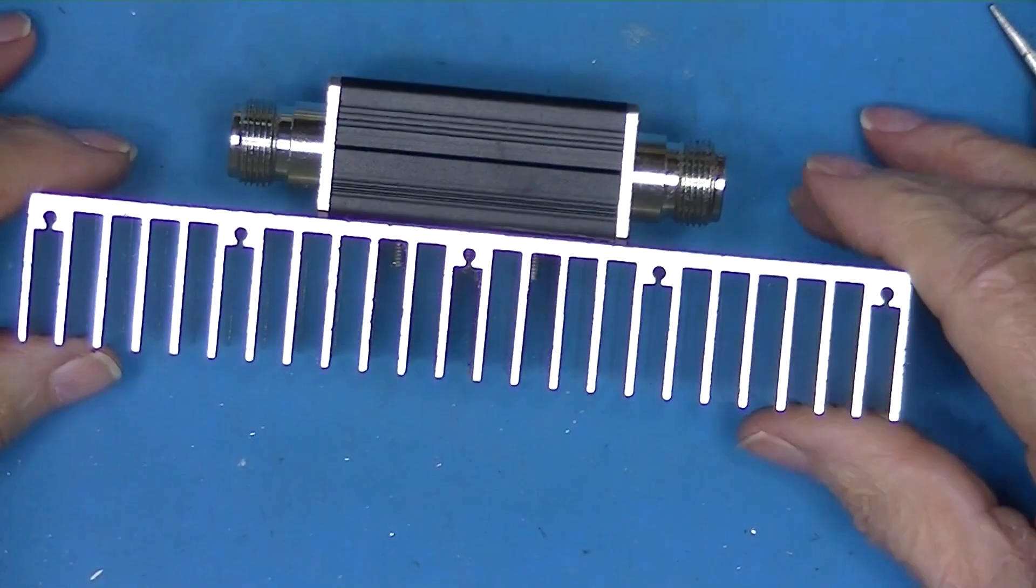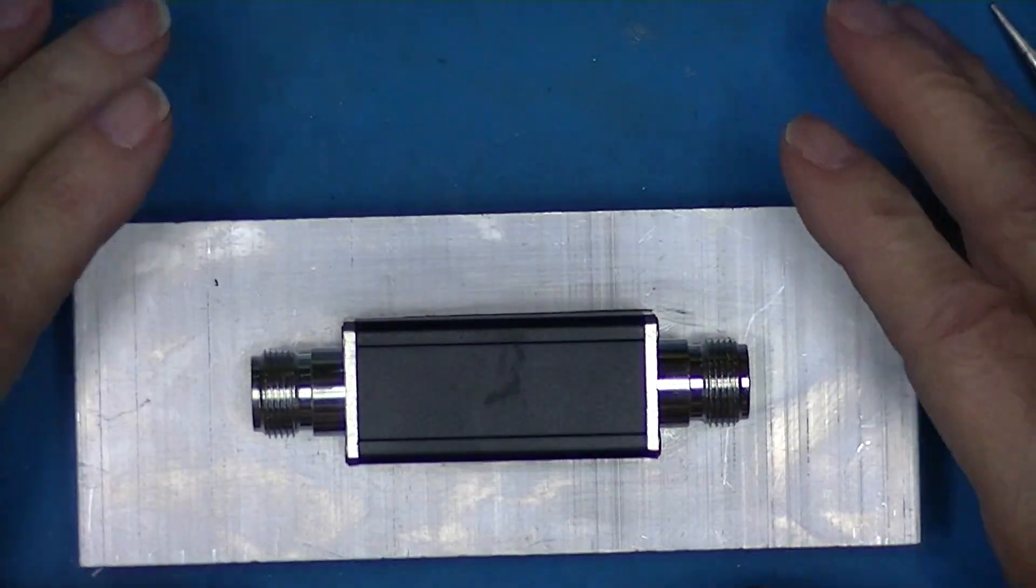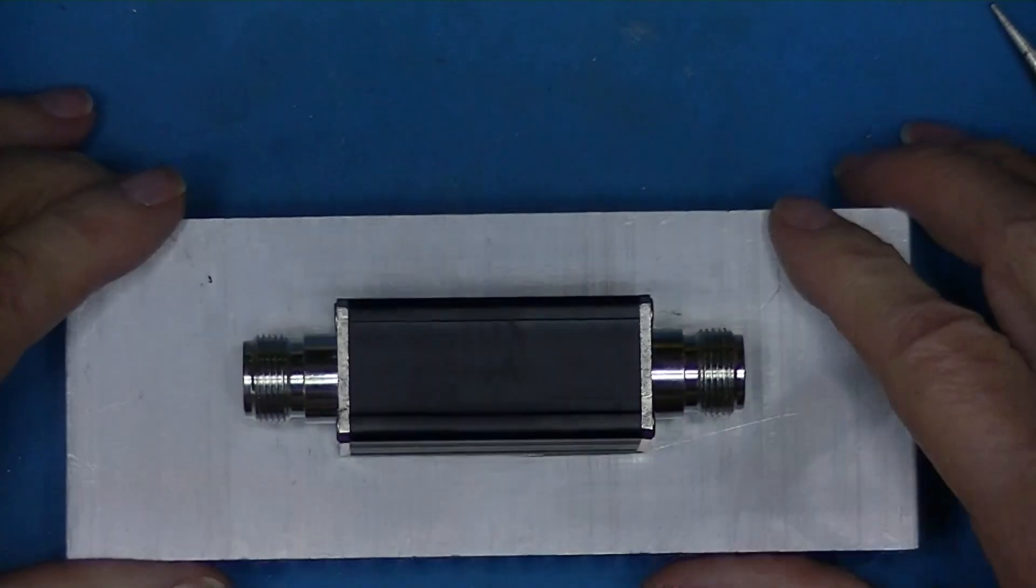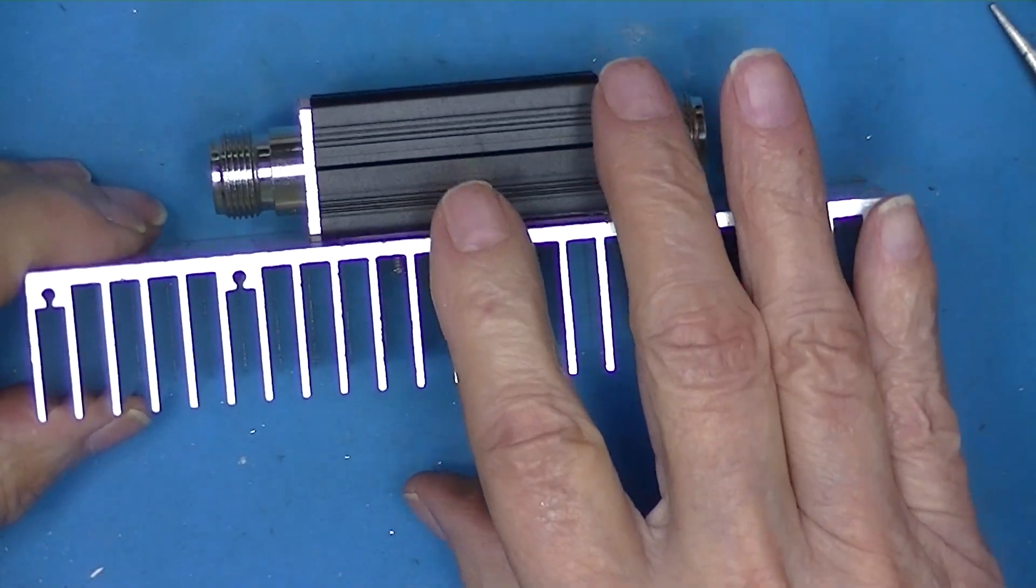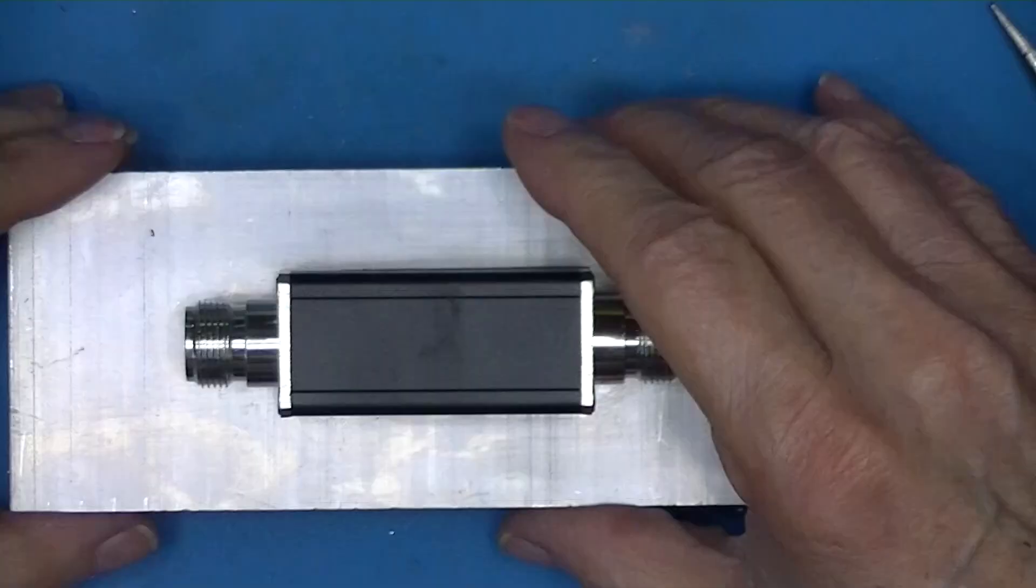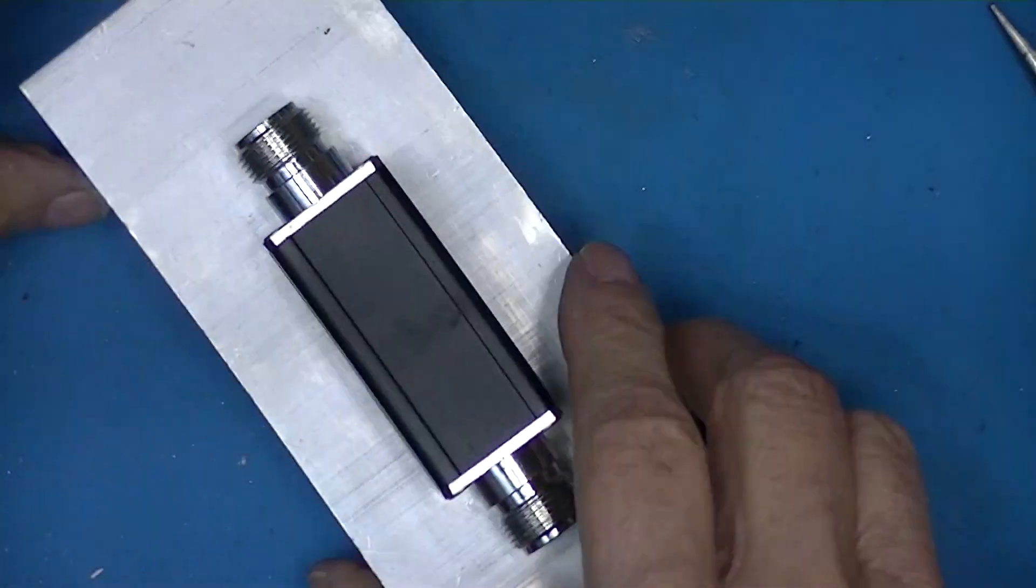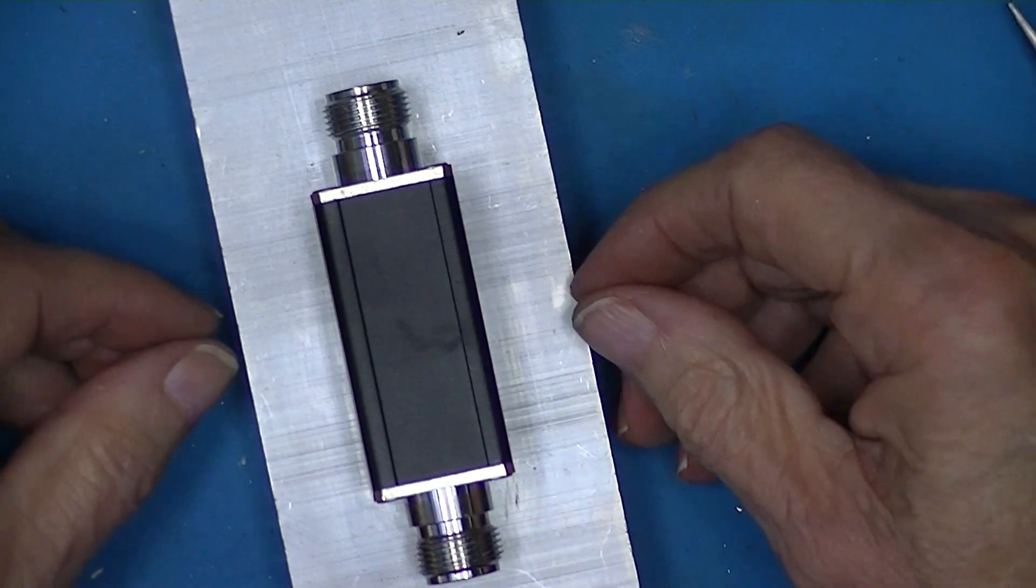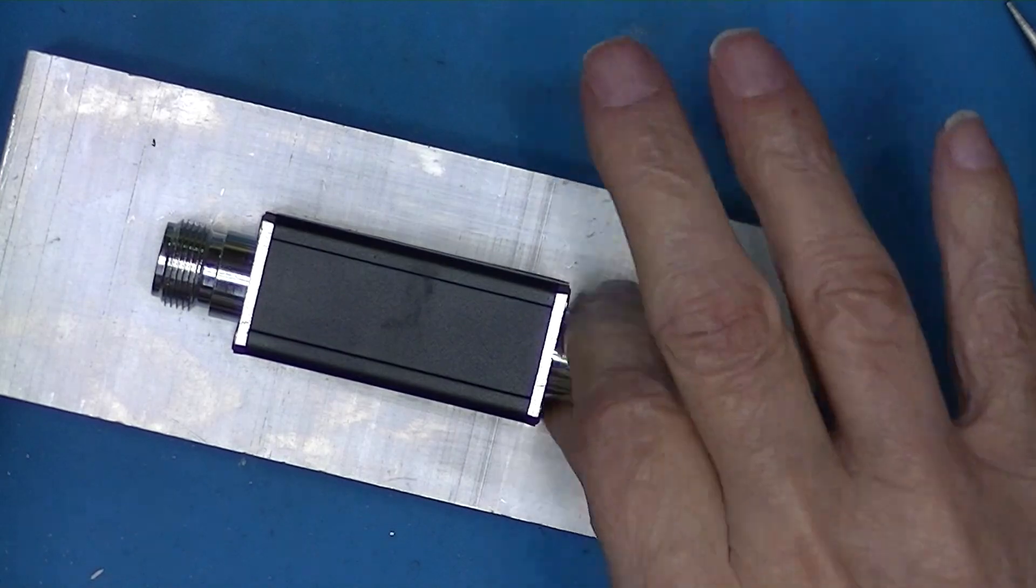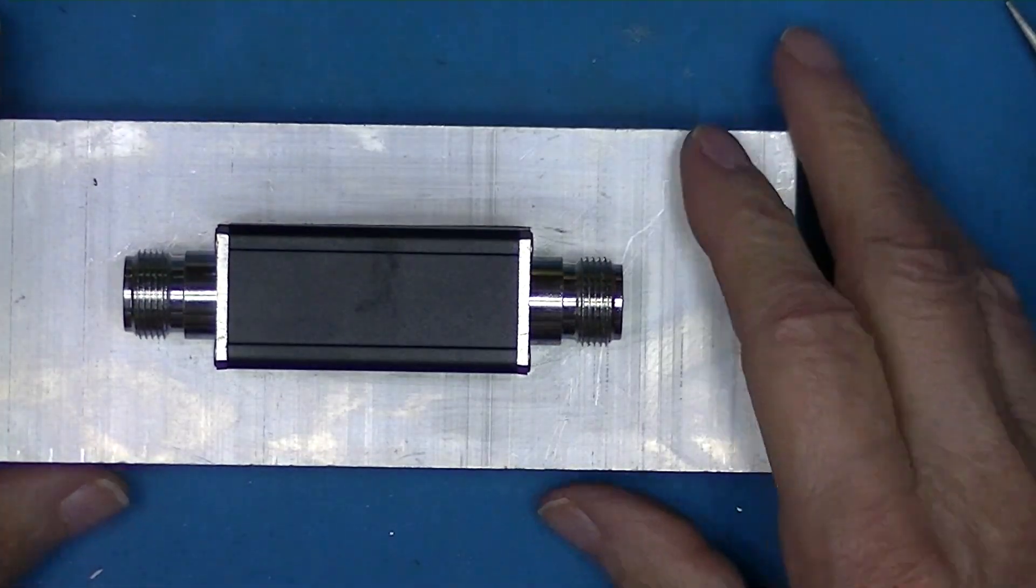And there we have our completed 30 decibel attenuator. Now that little chip inside is rated supposedly for 150 watts. That is dependent upon how well the heat is carried away from the resistor. The only other option I can think of would be to have mounted this crosswise so that the connectors are available here, instead of having to have your fingers hit the heat sink. But this seemed a little more compact to me.